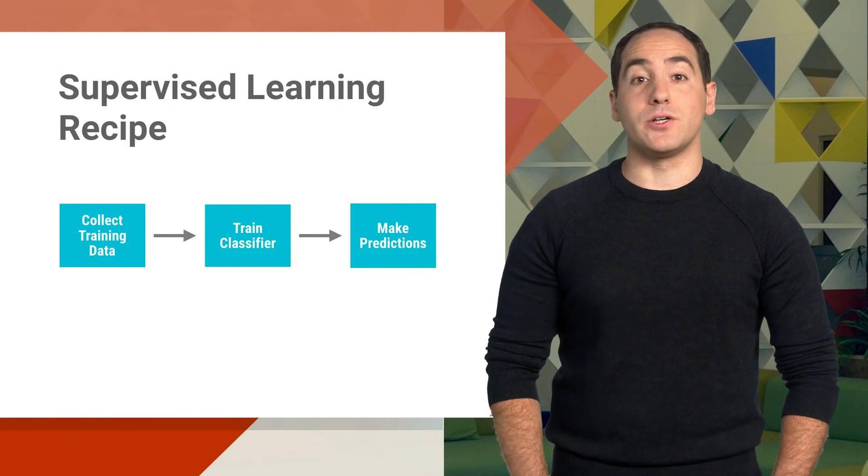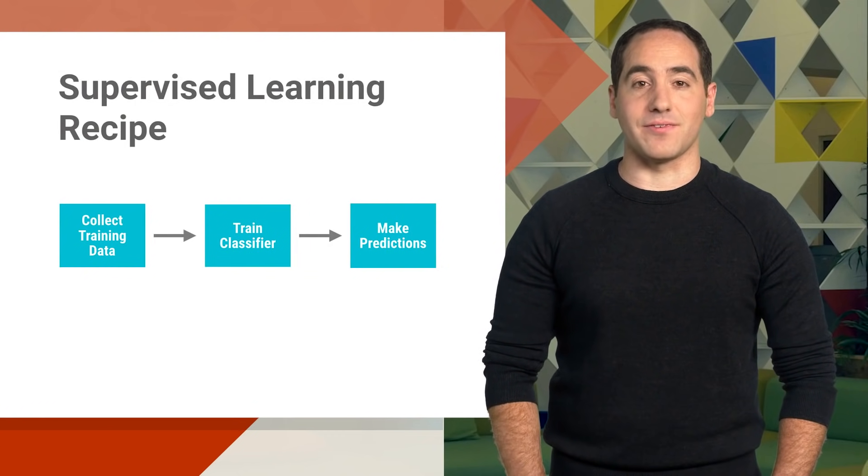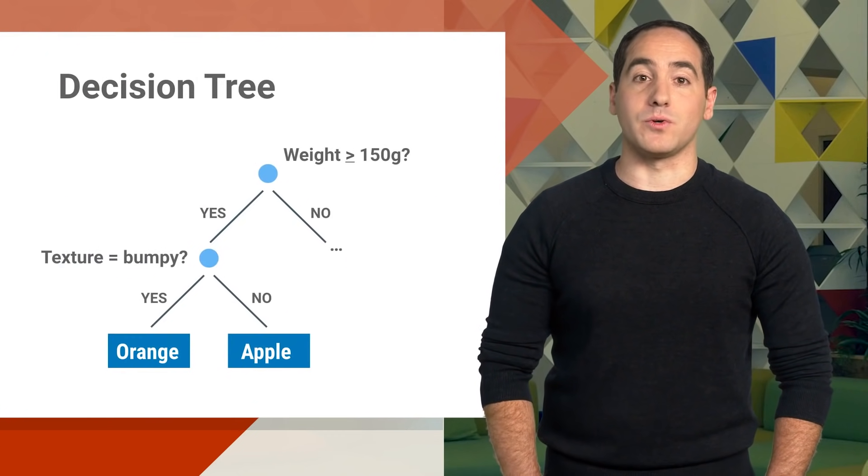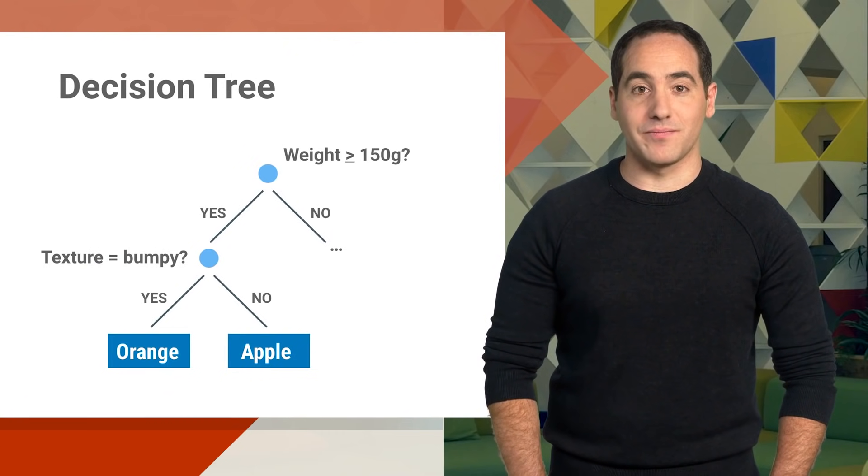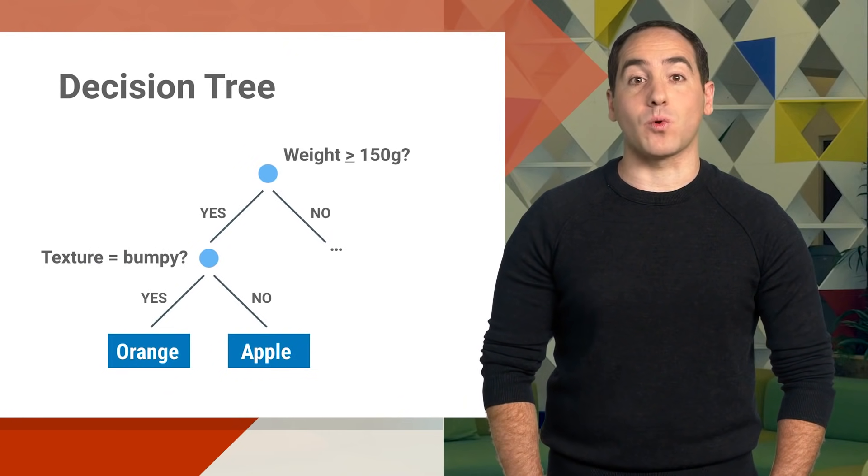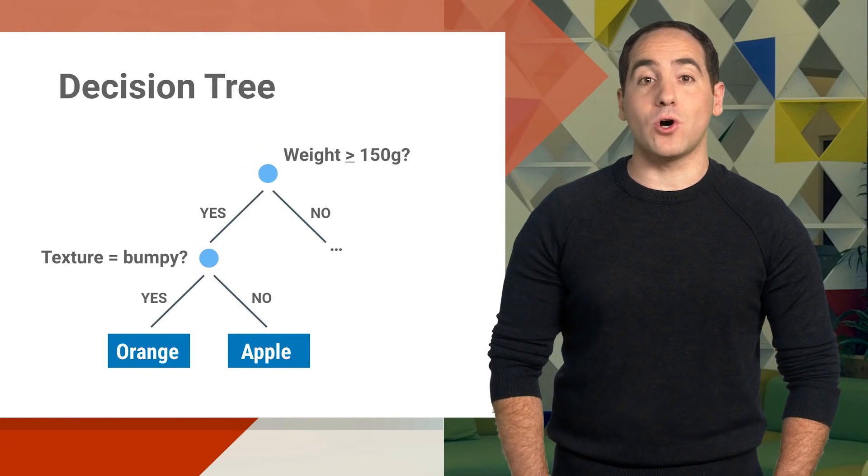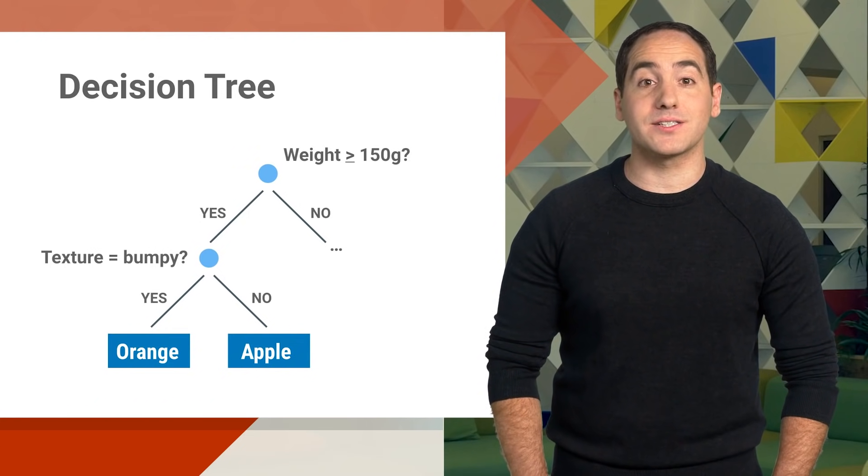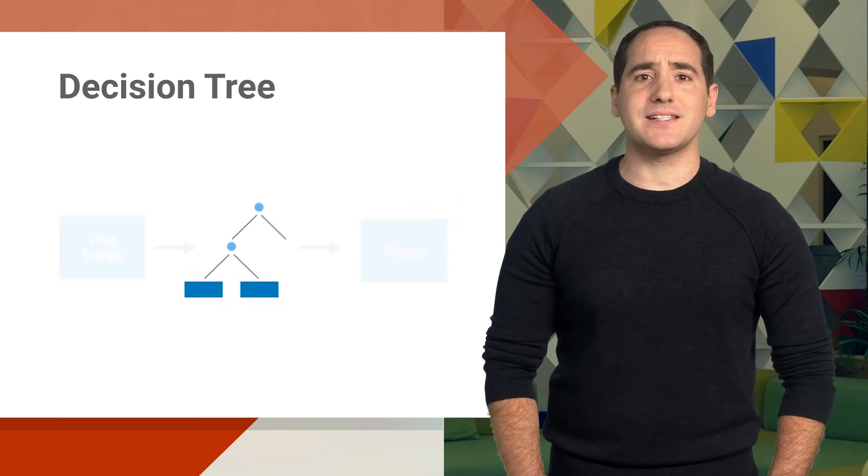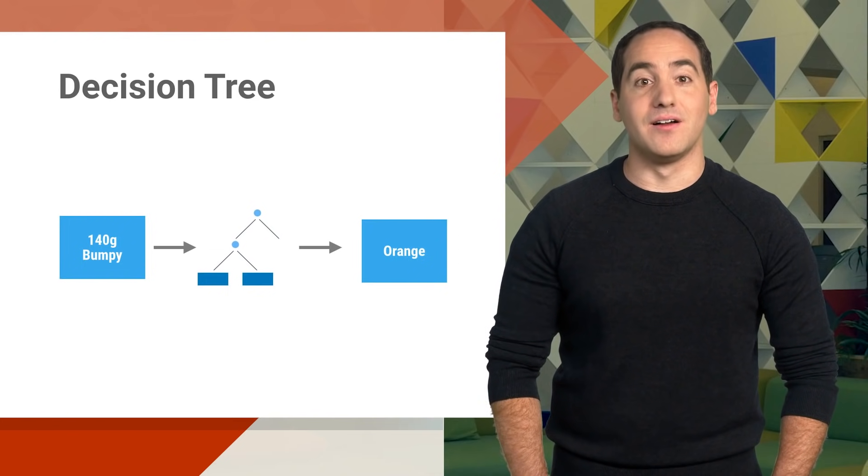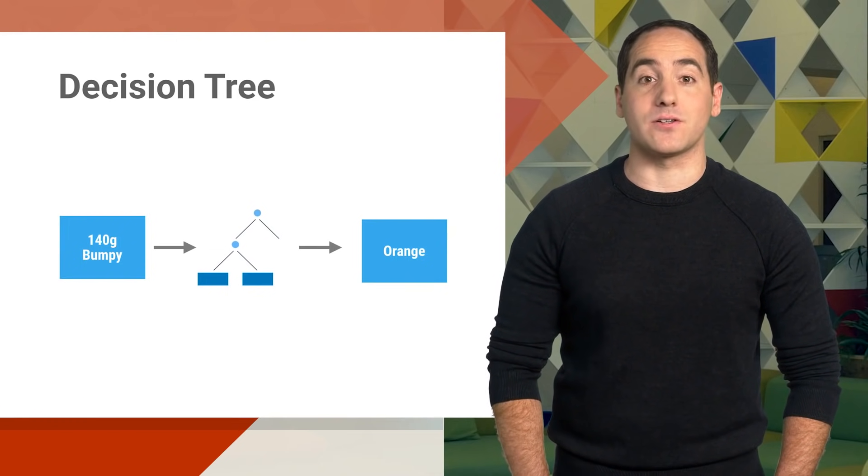Step two in our recipe is to use these examples to train a classifier. The type of classifier we'll start with is called a decision tree. We'll dive into the details of how these work in a future episode. But for now, it's okay to think of a classifier as a box of rules. That's because there are many different types of classifier, but the input and output type is always the same.